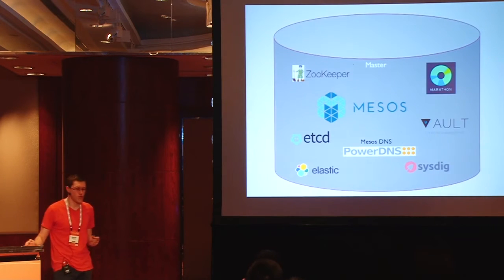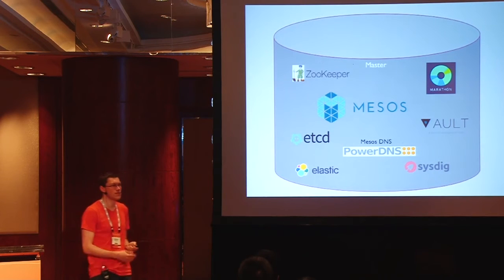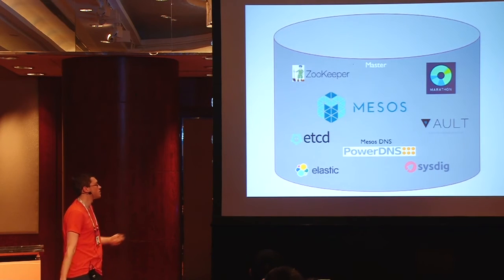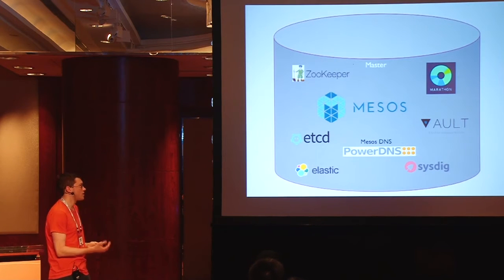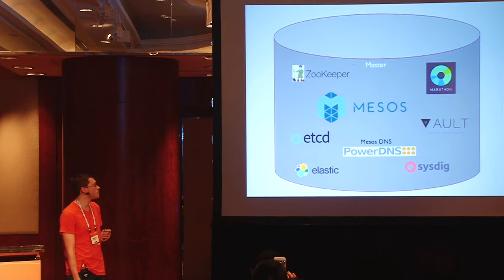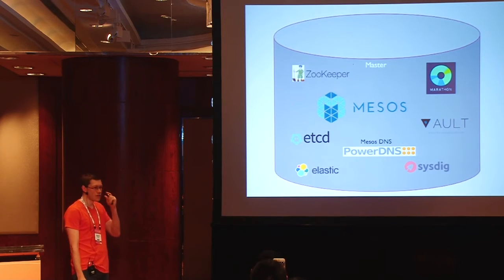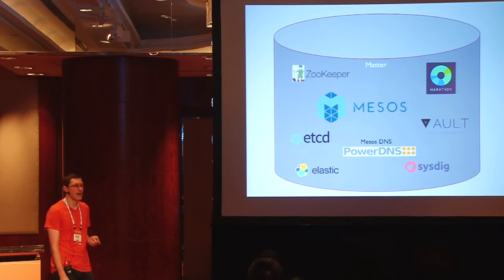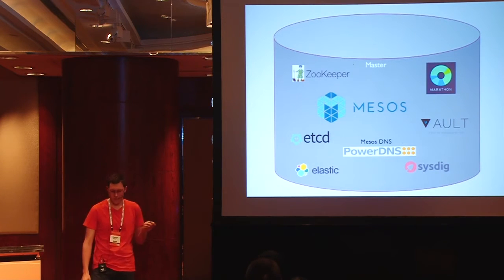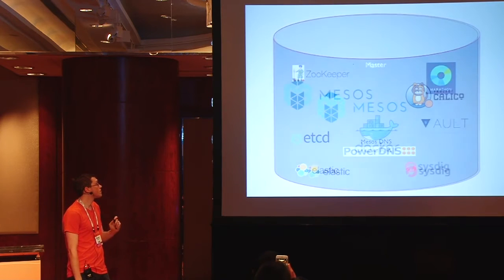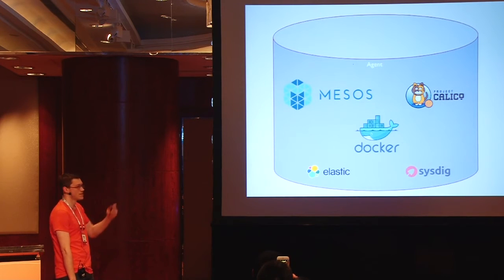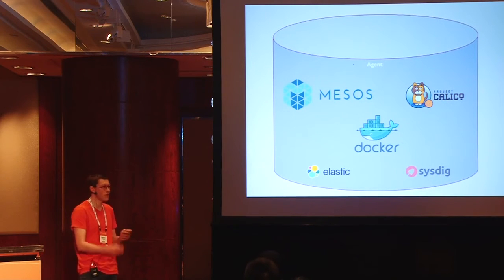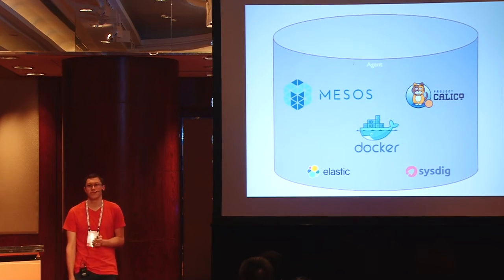We have two role-specific images. The master image runs all master functionality: ZooKeeper quorum, Mesos master, Marathon master, etcd cluster (needed for Calico), HAProxy, Mesos DNS, PowerDNS, and Elastic and Sysdig agents for monitoring. The agent image runs the Mesos agent, Calico for agent networking, Docker, and our monitoring tools.